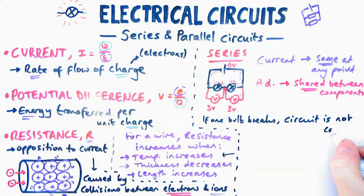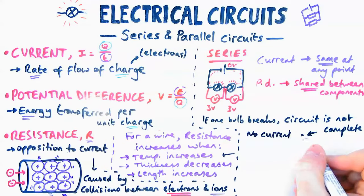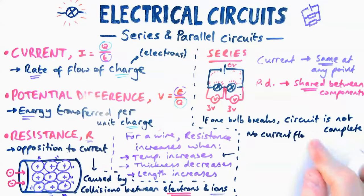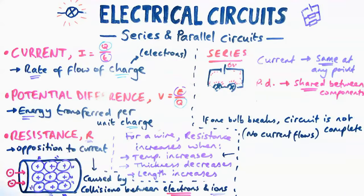Now one downside to series circuits is that if one bulb breaks, the circuit is not complete and there will be no current flowing. So that means if one bulb breaks, the whole circuit is pretty much useless, which obviously is not a good thing.